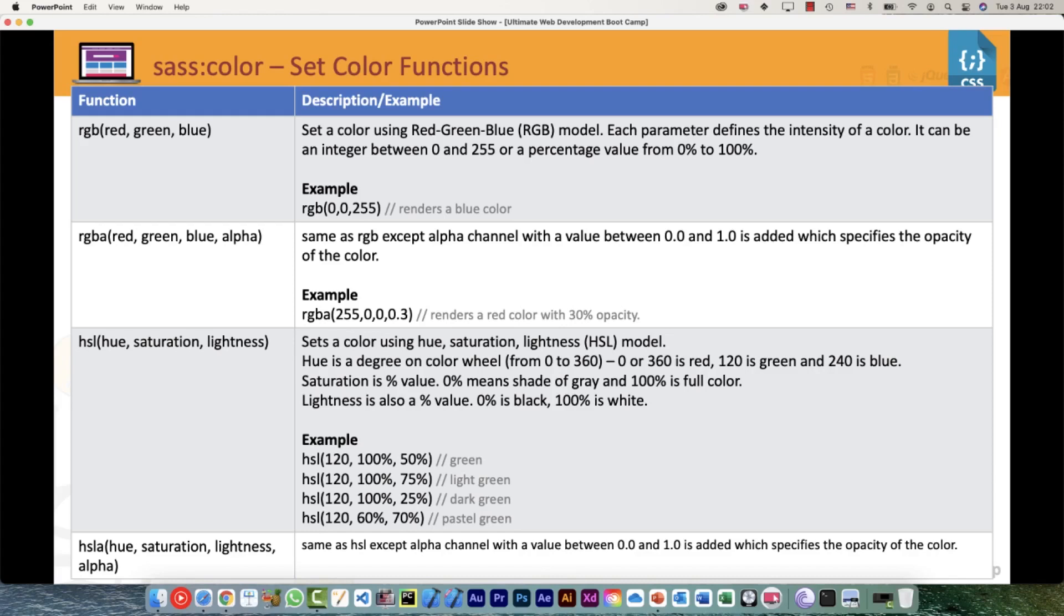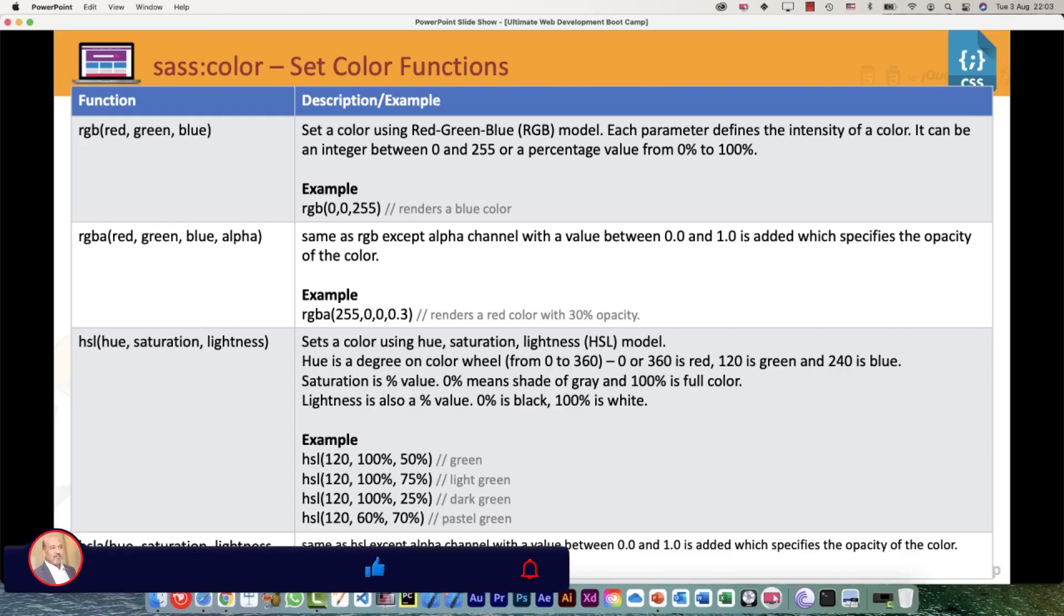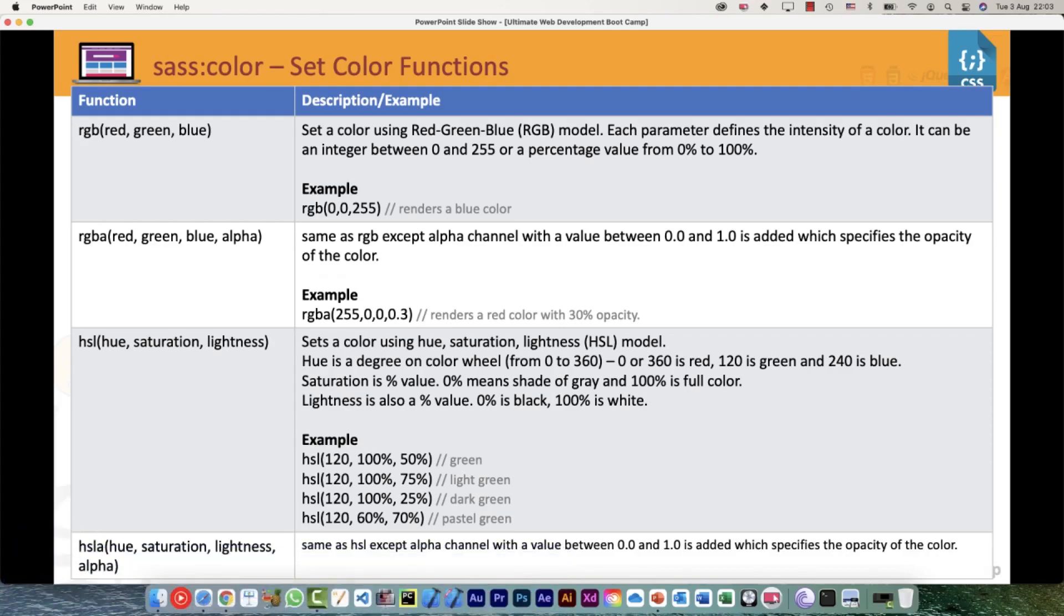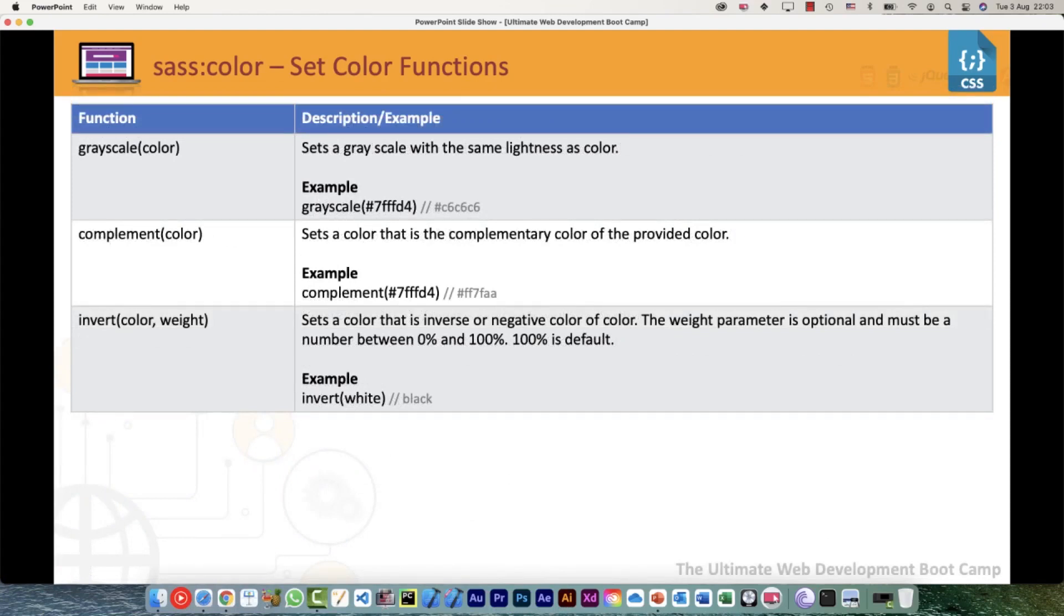The same way we can set the colors with the help of HSL and HSLA. Basically, HSL is hue, saturation, and lightness. Hue is the degree on the color wheel from 0 to 360 degrees, where 0 or 360 would be red, 120 is green, and 240 is blue. There are plenty of tools available to set the colors, and we just simply need to pick those values and use them. If we are using HSL color, we have to use this function. Again, A stands for alpha, which controls the opacity of the color.